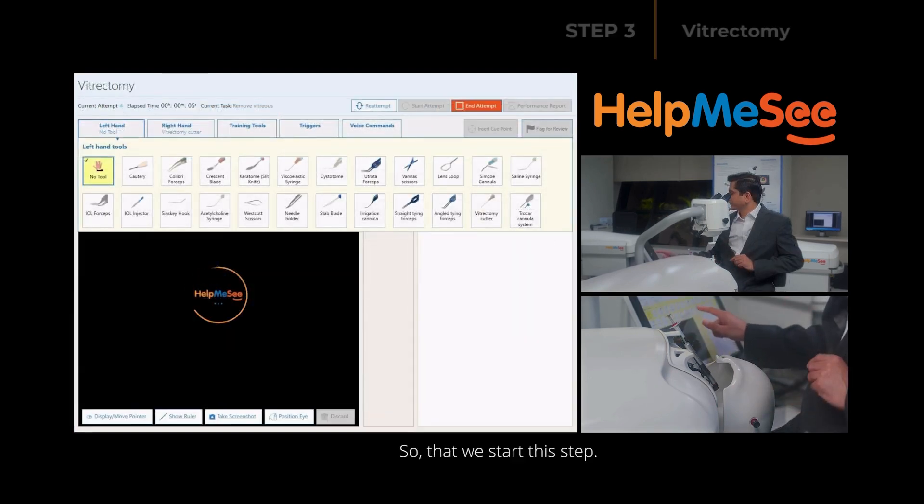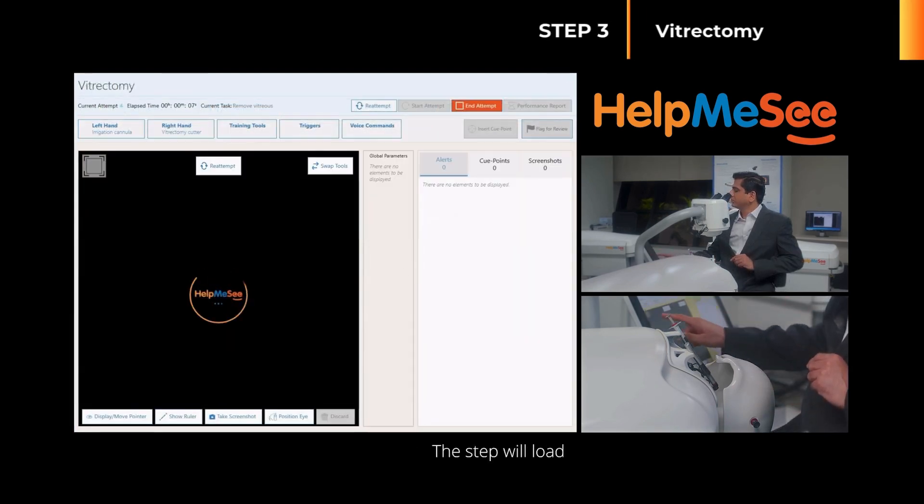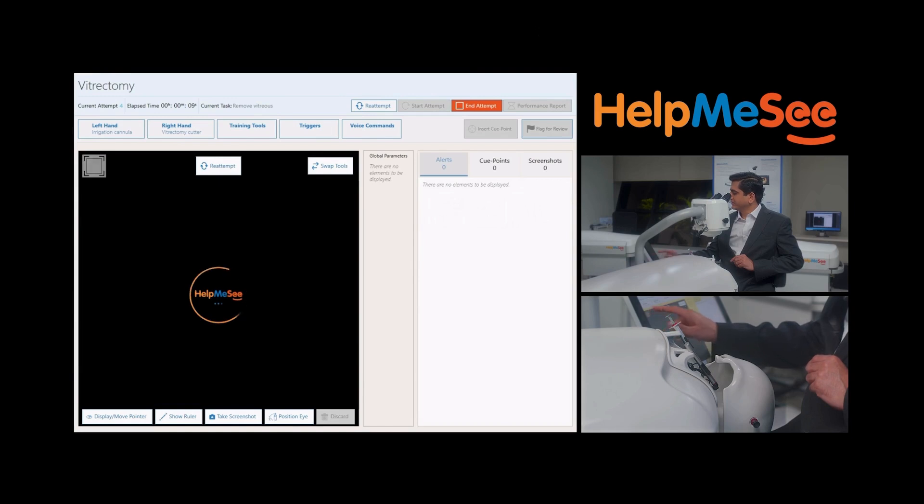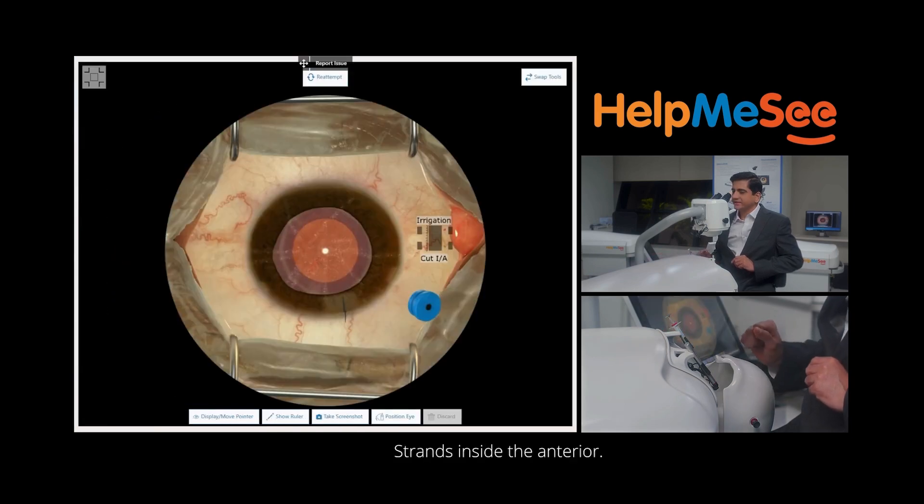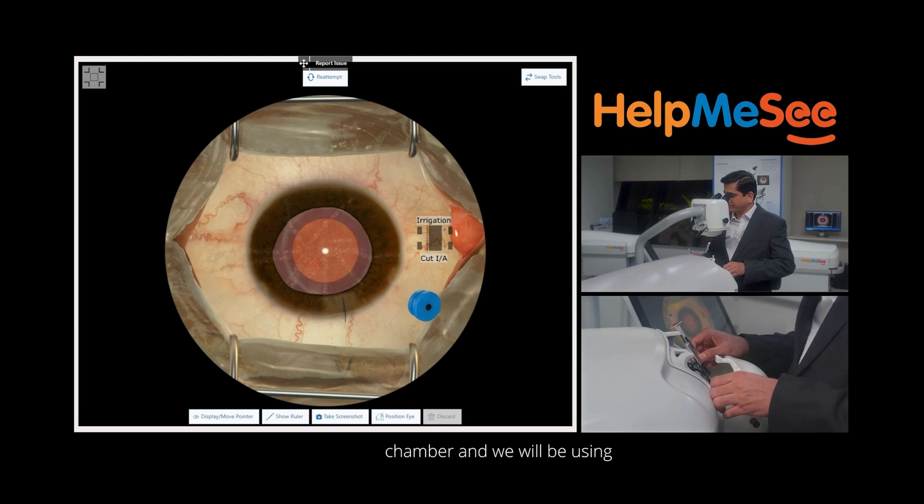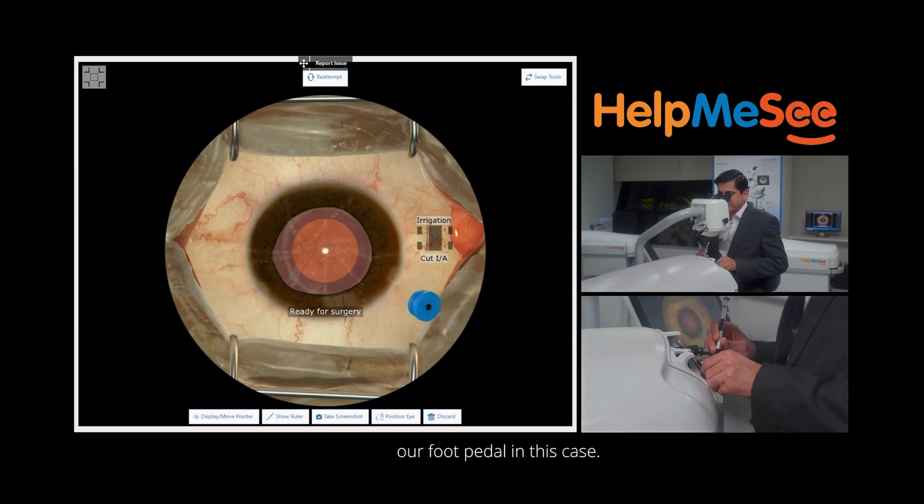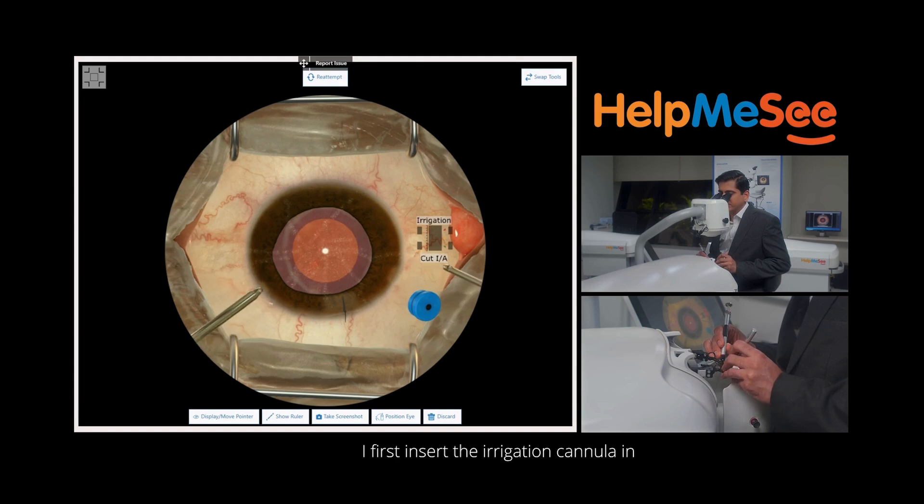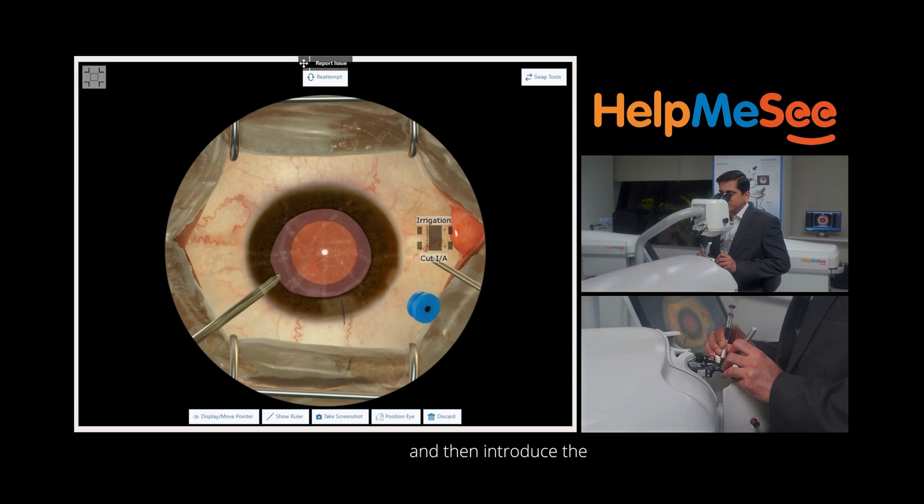The step will load with the cannula in place. There will be vitreous strands inside the anterior chamber and we will be using our foot pedal. I first insert the irrigation cannula in the left parasynthesis and then introduce the vitrectomy cutter through the cannula.